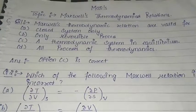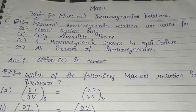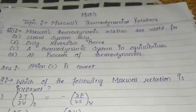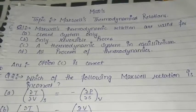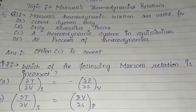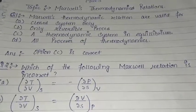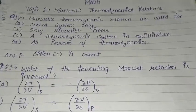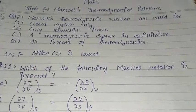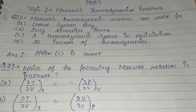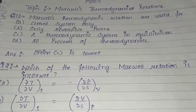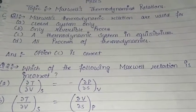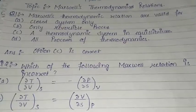Question number one: Maxwell's Thermodynamical Relations are valid for — A. closed system only, B. only reversible process, C. a thermodynamic system in equilibrium, D. all processes of thermodynamics. Here option C is the correct answer: a thermodynamic system in equilibrium.